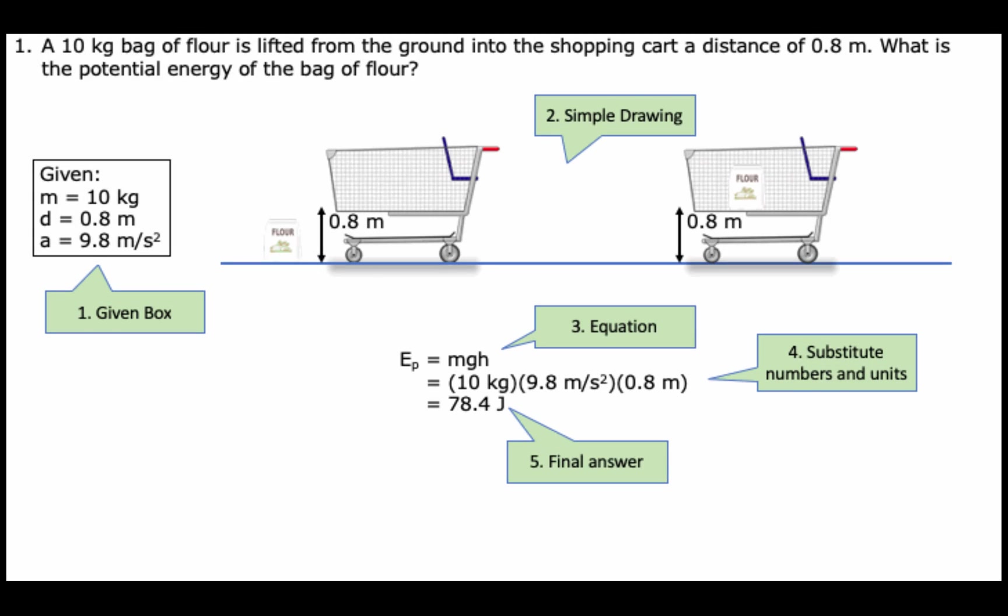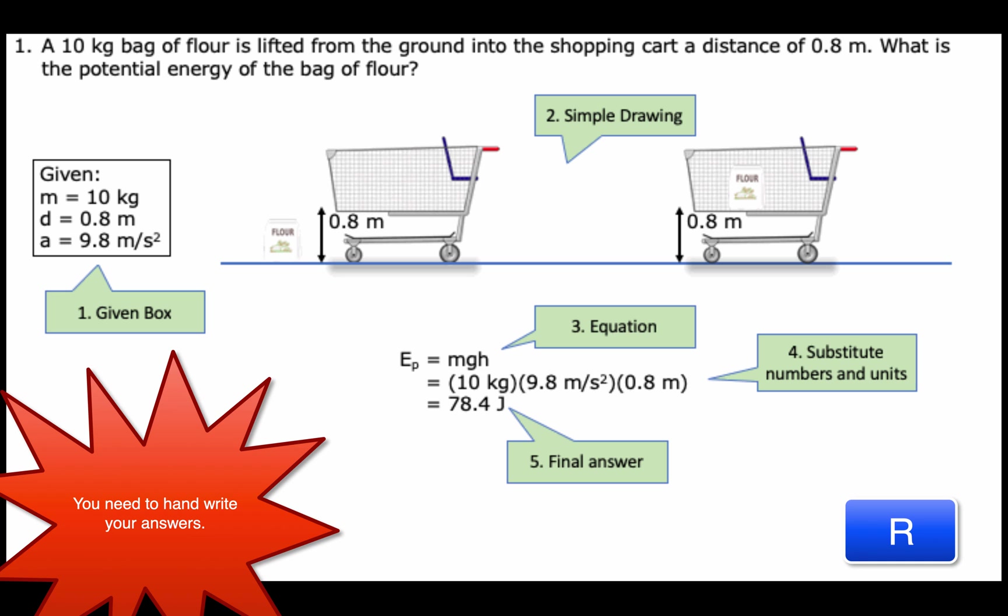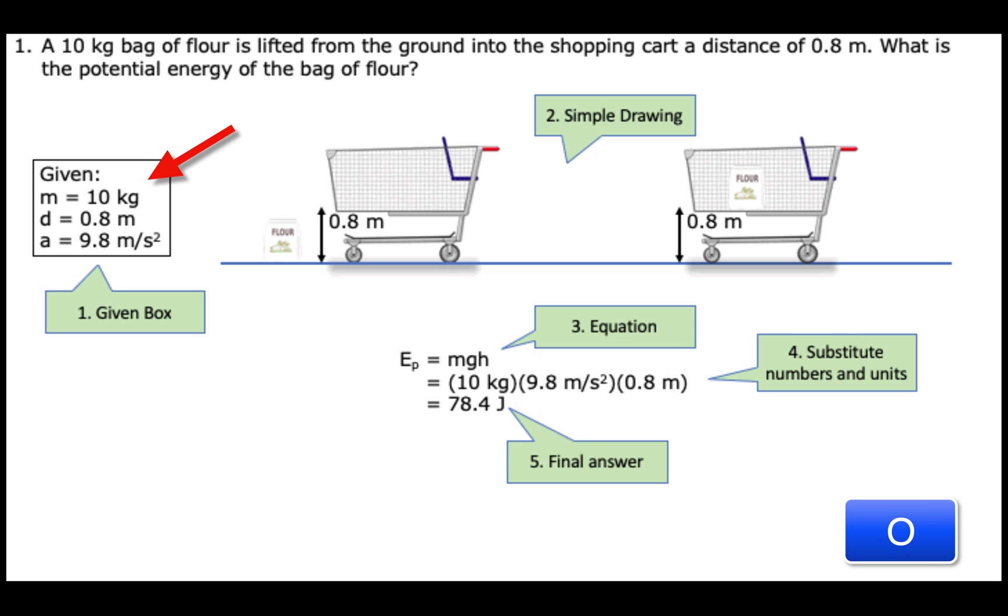For each of the physics questions that has math you need to show five steps. For this example, a 10 kilogram bag of flour is lifted from the ground into a shopping cart a distance of 0.8 meters. What is the potential energy of the bag of flour? Step one: create a given box. You can see this on the left side. Step two: create a simple drawing of the problem. Step three: what is the equation you're going to use? Step four: substitute the numbers and units. Step five: your final answer.